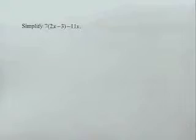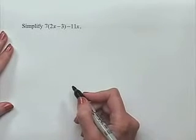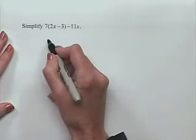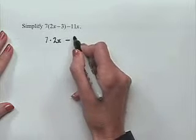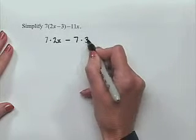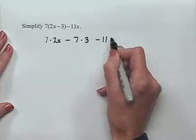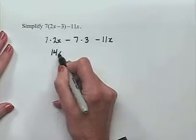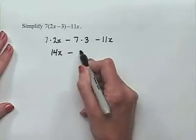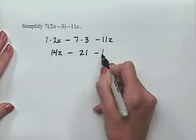Now let's look at simplifying an algebraic expression. We want to simplify 7 times 2x minus 3 minus 11x. We begin by using the distributive property: multiply 7 times 2x, then subtract 7 times 3, and carry down the minus 11x. That gives us 14x minus 21 minus 11x.